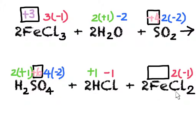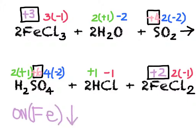Finally, for iron(II) chloride, the oxidation numbers again need to add up to a total of zero. We've got minus 2 coming from the chlorides, which means we need positive 2 being contributed by the iron. So while all the other oxidation numbers stay the same, the oxidation number of iron goes from positive 3 to positive 2 — it decreases. Meanwhile, the oxidation number of sulfur went from positive 4 to positive 6 — it increased — which means sulfur must have undergone oxidation, and iron must have undergone reduction.